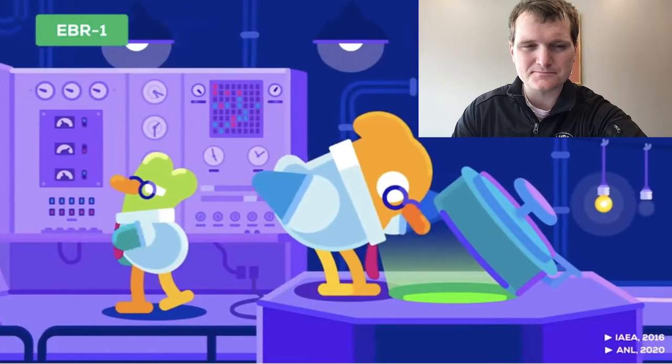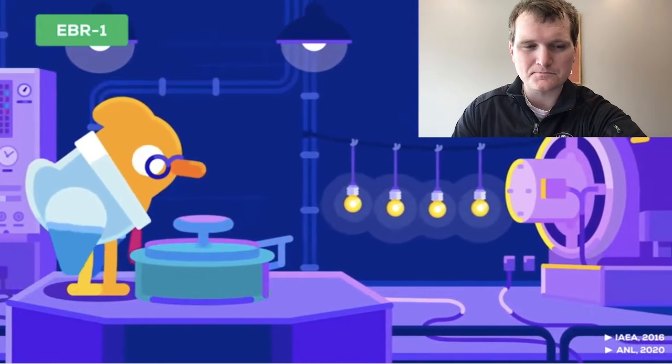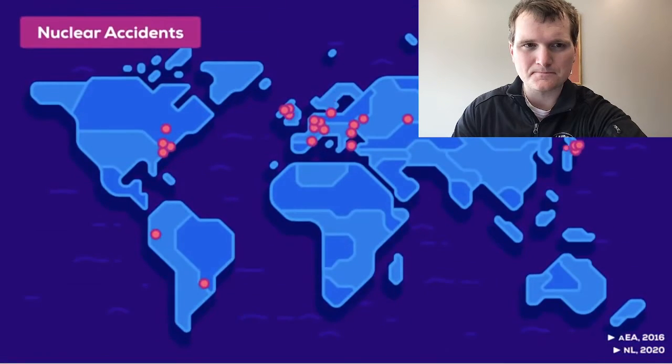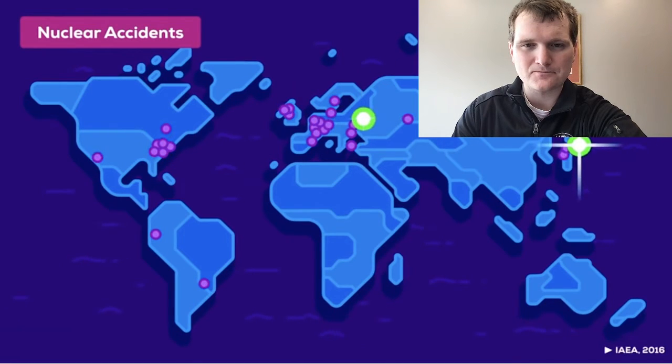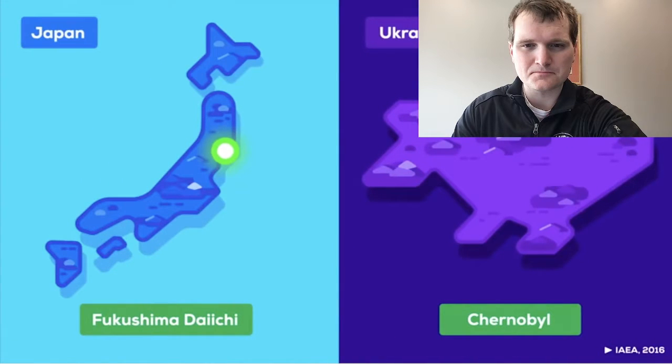Nuclear energy has been a thing since 1951. And since then, there have been around 30 reported accidents globally. Most of them were pretty minor compared to the two disasters everybody is familiar with, Fukushima and Chernobyl.